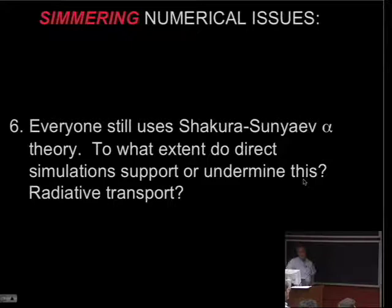Everybody still uses, not everybody but I would say people who work with observations and really need to have some kind of phenomenological handle on turbulence, they still use Shakura-Sunyaev alpha theory. To what extent do direct numerical simulations support this? And to what extent do they undermine this? What about radiative transport in MHD turbulence? Where do things stand? Actually, Julian just showed me a preprint minutes ago, which looks like there's been some interesting progress on that question.